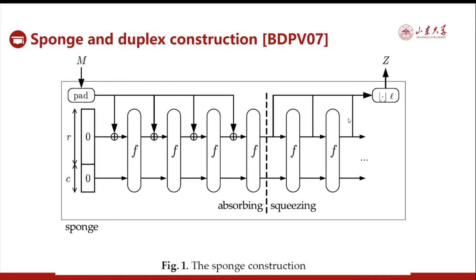It turns out to be an indifferentiable random oracle with variable input length and variable output length. So this could be a multi-purpose cryptographic object used for many settings, for example cryptographic hashing, MACs, and pseudorandom generation.